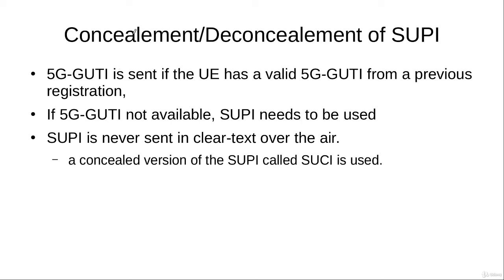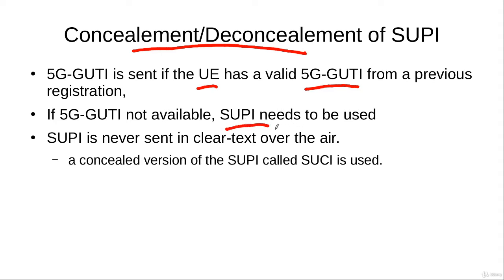We now come to the concealment and deconcealment of the SUPI. At the start of the authentication procedure, the user equipment sends the 5G-GUTI if it has previously registered with the network. If the 5G-GUTI is not available, then SUPI needs to be used. However, SUPI is the permanent identity of a subscriber and is never sent over the air interface because it may be caught by an IMSI catcher. So SUPI is encrypted by the user equipment as SUCI.